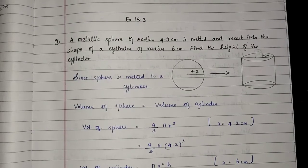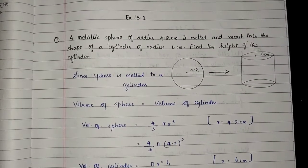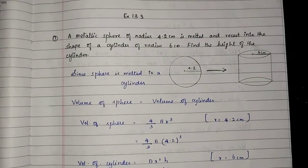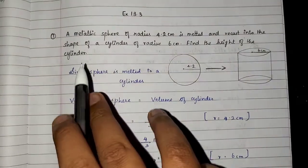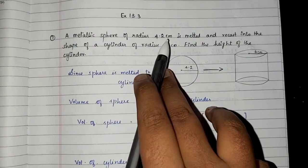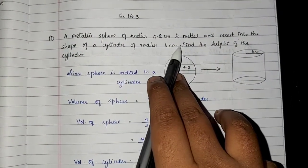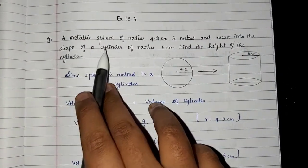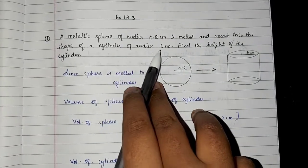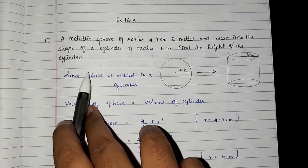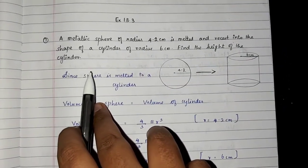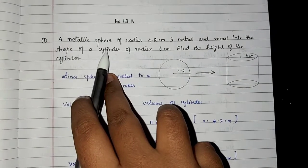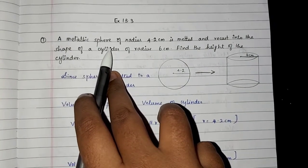Hello guys, welcome back to Grass Wisdom. In this video we will talk about Exercise 13.3. The first question: a metallic sphere of radius 4.2 cm is melted and recast into the shape of a cylinder of radius 6 cm. Find the height of the cylinder.